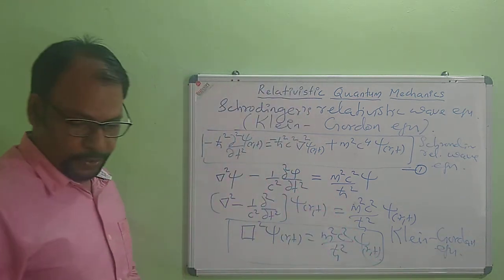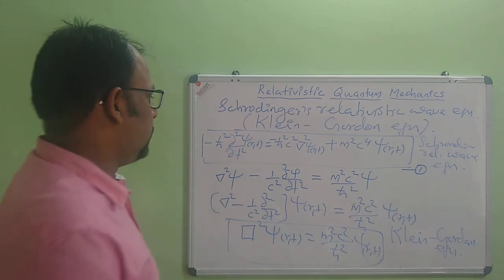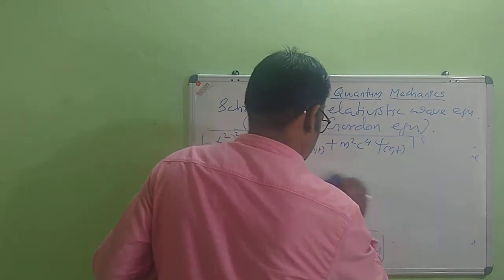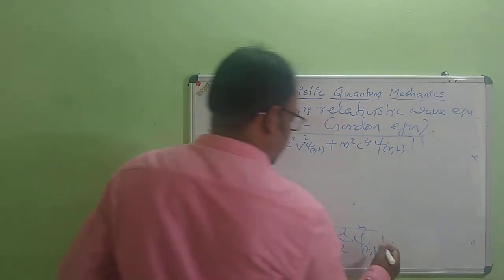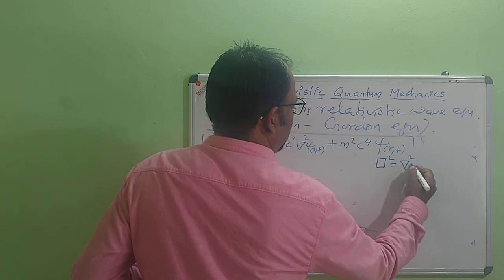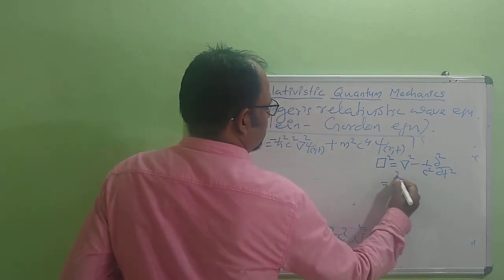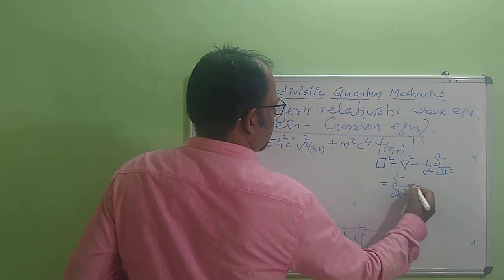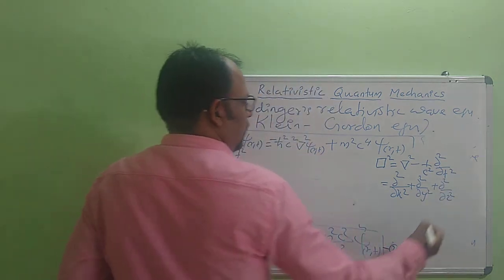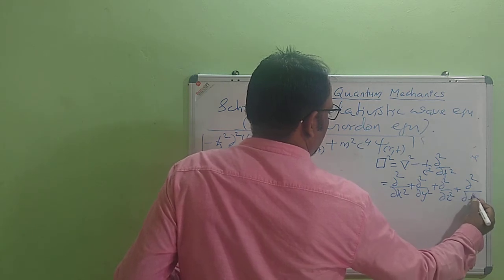The D'Alembertian operator is defined as ∇² − (1/c²) ∂²/∂t². Here ∇² is the space derivative: ∂²/∂x² + ∂²/∂y² + ∂²/∂z². The time term −(1/c²)∂²/∂t² can be written as ∂²/∂(ict)², since i² = −1, giving −(1/c²)∂²/∂t². So the D'Alembertian is: ∂²/∂x² + ∂²/∂y² + ∂²/∂z² + ∂²/∂(ict)².